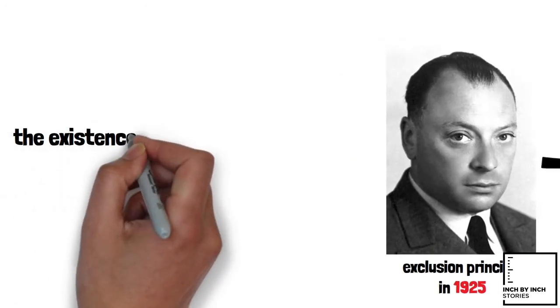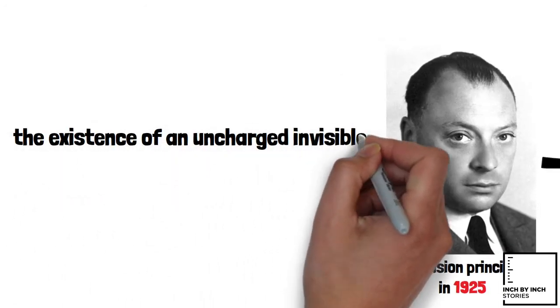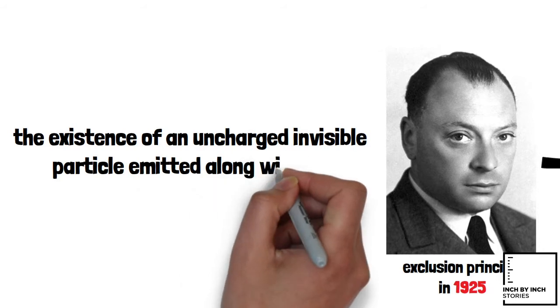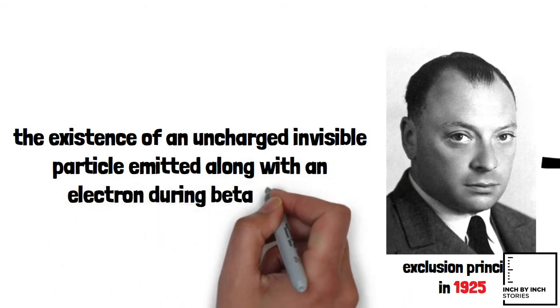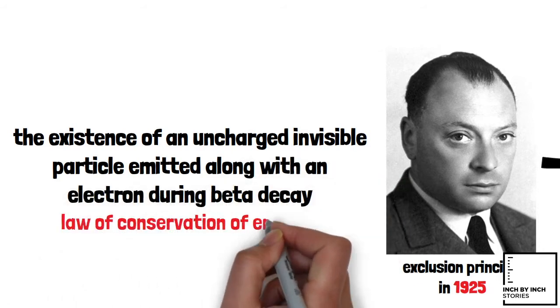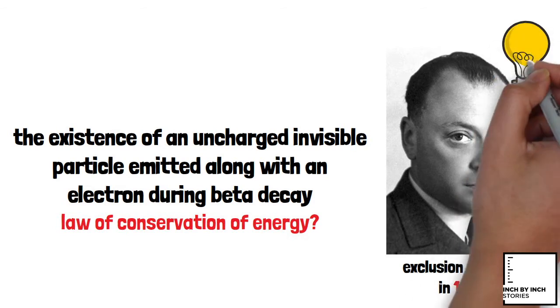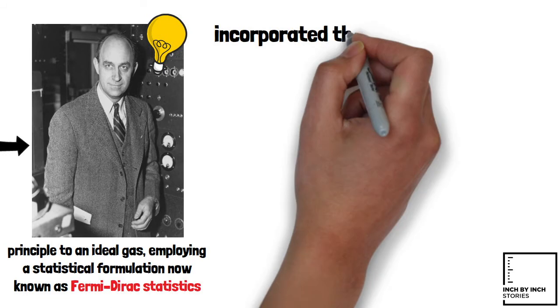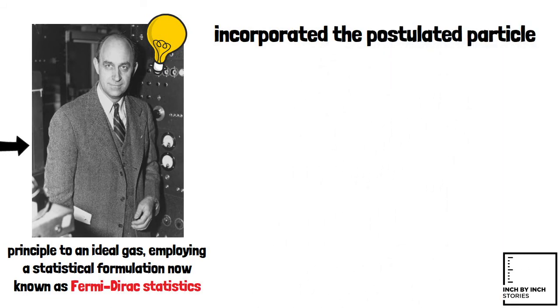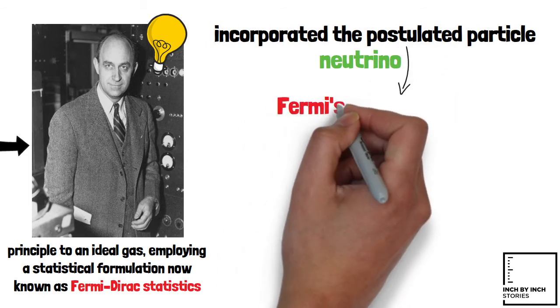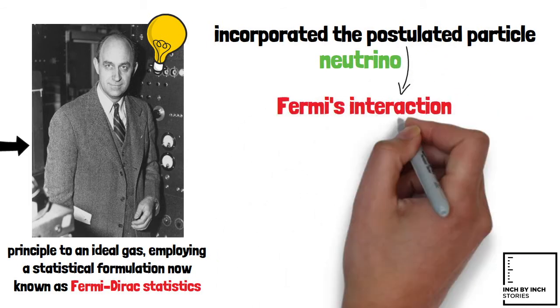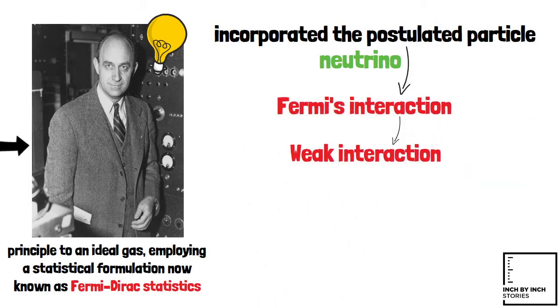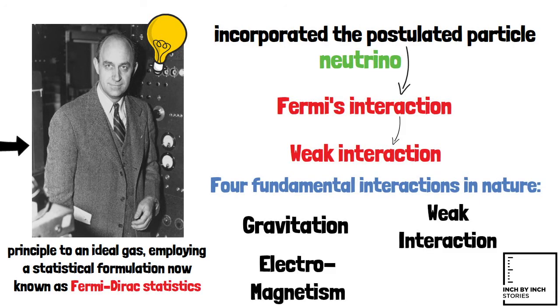Pauli later postulated the existence of an uncharged invisible particle emitted along with an electron during beta decay to satisfy the law of conservation of energy. Fermi took up this idea, developing a model that incorporated the postulated particle, which he named the neutrino. His theory, later referred to as Fermi's interaction and now called weak interaction, described one of the four fundamental interactions in nature.